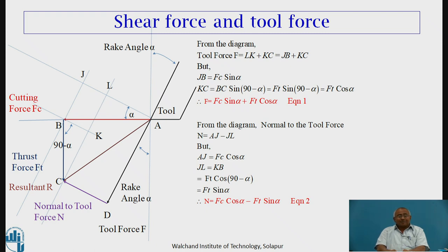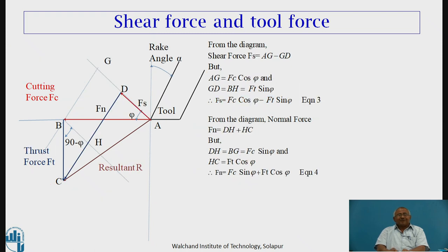After analytically calculating the formulae for tool force and normal to the tool force, we now calculate formulae for shear force and normal to the shear force, which act along the shear plane. For that, we draw a triangle of forces — cutting force, thrust force, and resultant — as triangle ABC shown in the diagram. We draw a line from point A making an angle phi with cutting force AB, and then draw a normal from point C to that line, cutting it at point D. So CD represents the normal to the shear force and AD represents the magnitude of shear force FS.